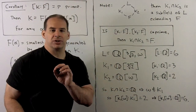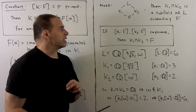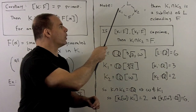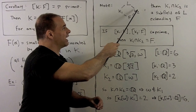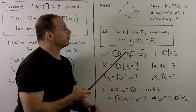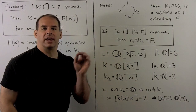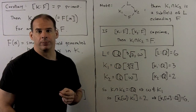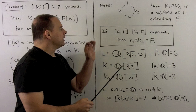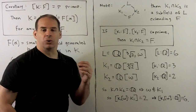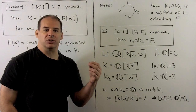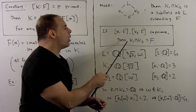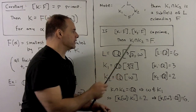Another application of the theorem: suppose we have field towers where L extends K₁ extends F, and L extends K₂ extends F. One can show that K₁ ∩ K₂ is a subfield of L extending F. If [K₁:F] and [K₂:F] are co-prime — no common factors — then K₁ ∩ K₂ equals F itself.